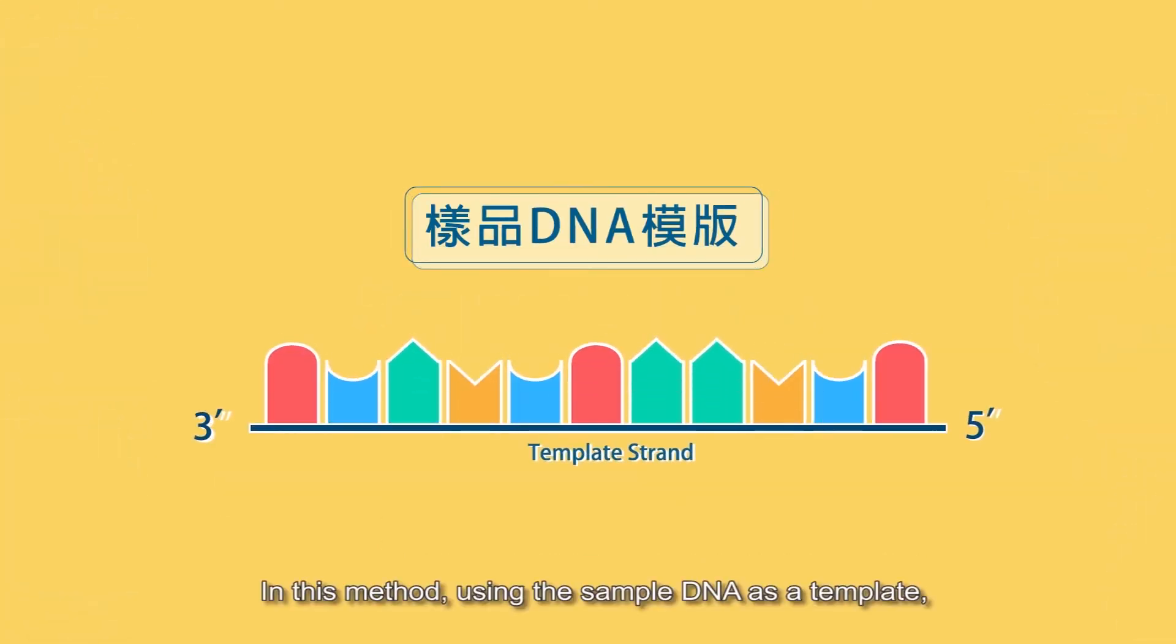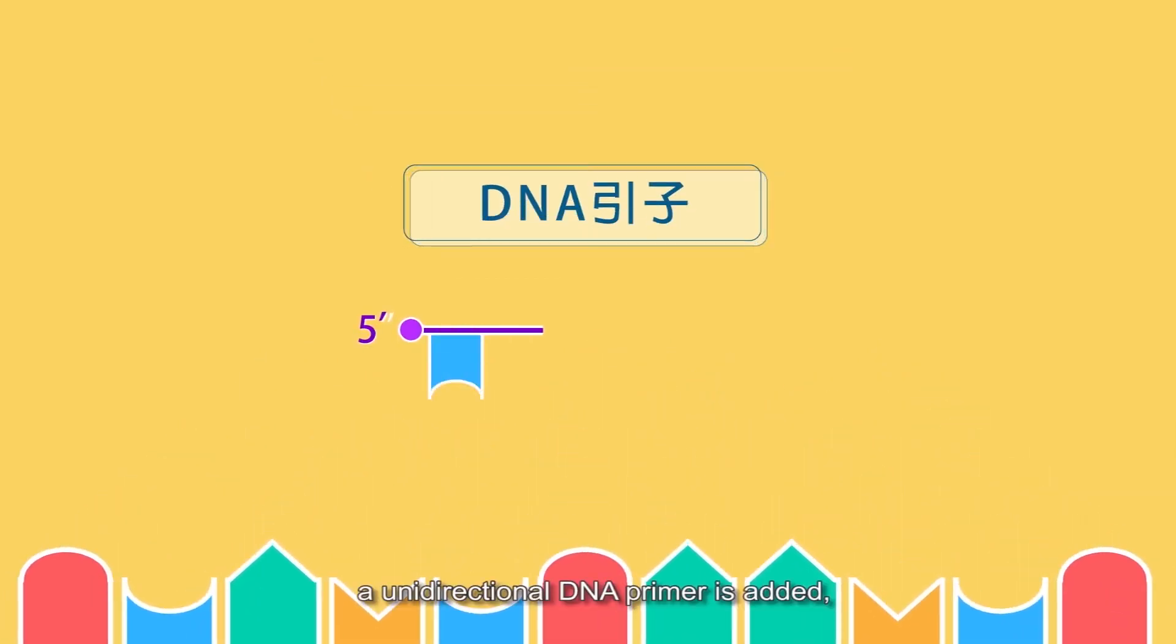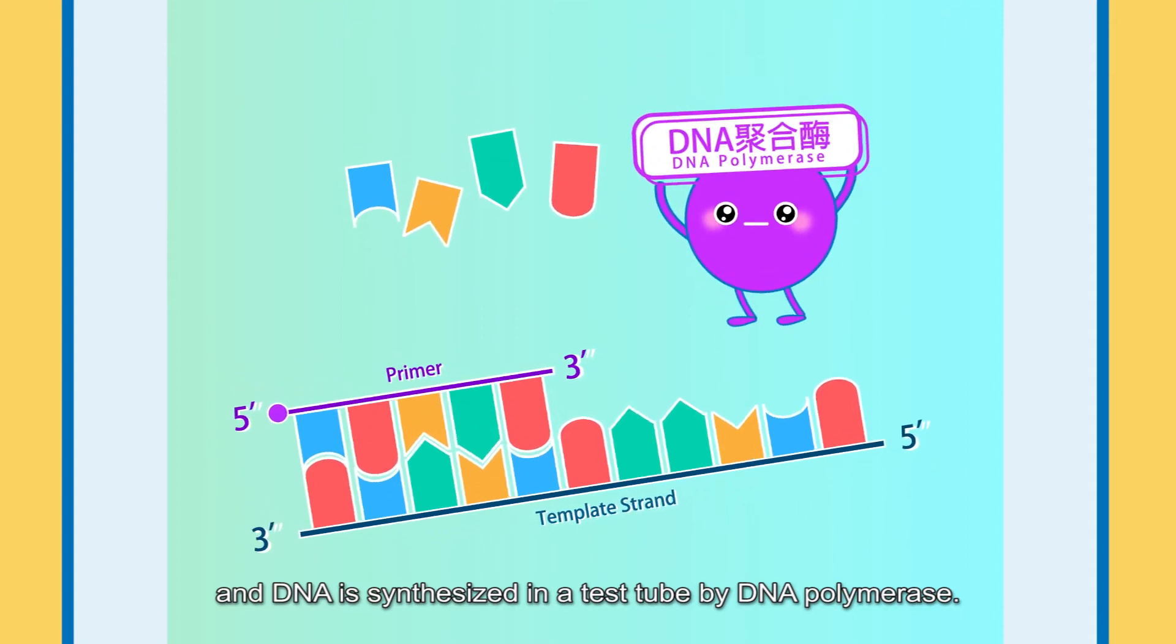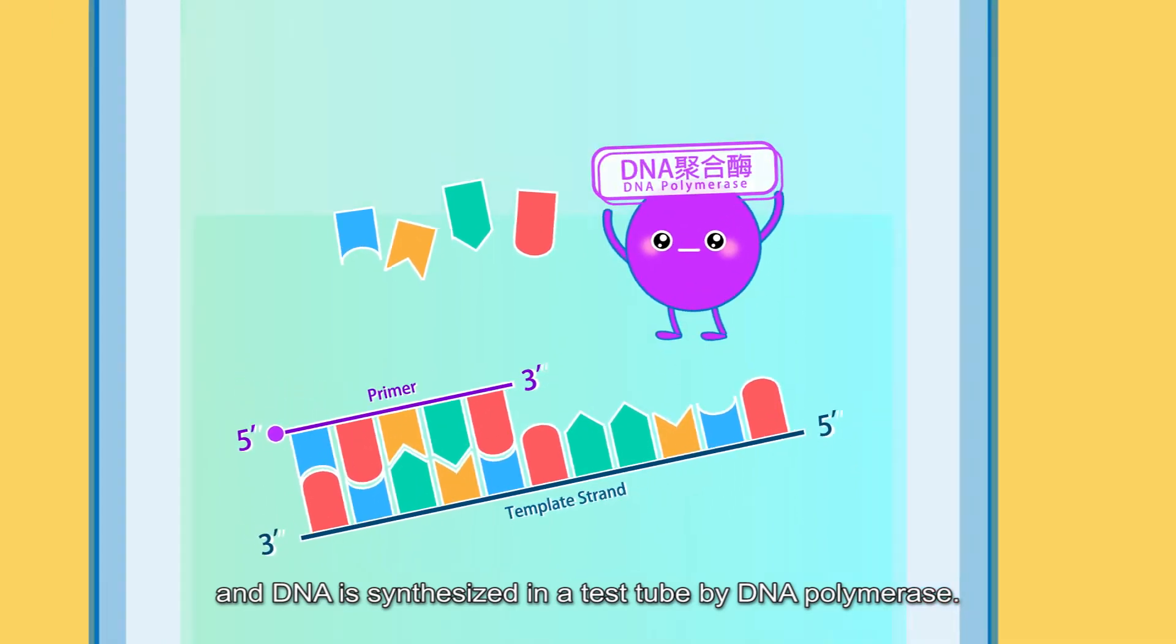Finger Chain Termination Method. In this method, using the sample DNA as a template, a unidirectional DNA primer is added, and DNA is synthesized in a test tube by DNA polymerase.